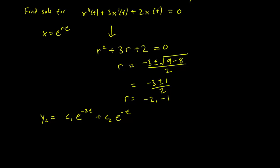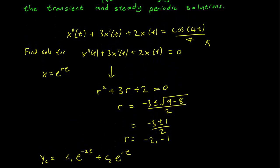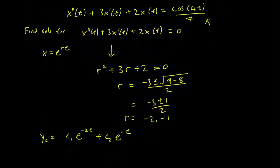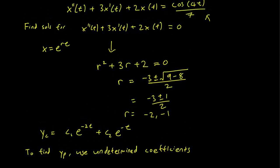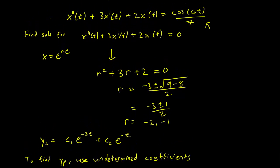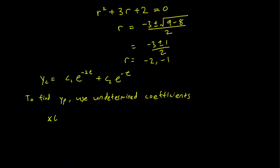Alright, and then now we need to figure out the solution for this non-homogeneous equation, one solution, to get the general solution. And we use undetermined coefficients here. And what we do is that we see that we have a cosine 4t on the right hand side, and so we guess that x(t) is going to be of the form A*cos(4t) + B*sin(4t).